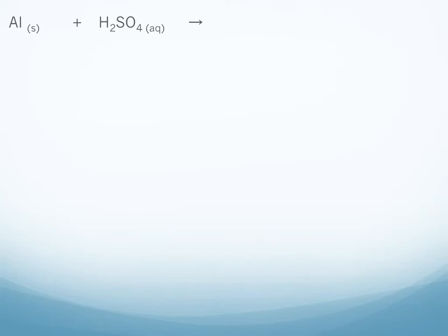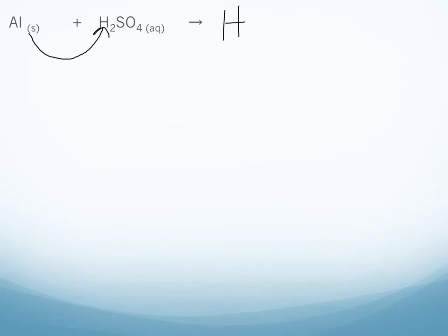In this example, we've got aluminum metal and we have sulfuric acid. We don't have a metal ion in our aqueous solution, but we do have hydrogen — that is our other option. So the question is: can aluminum replace hydrogen in this single replacement reaction? Find aluminum on your activity series — we're always just going to look up the single element metal. Hydrogen is below aluminum on the activity series, so this reaction will occur and we'll predict products. Hydrogen is going to be our new element.